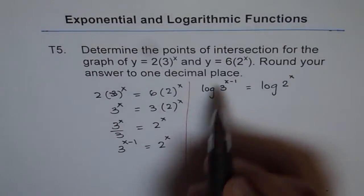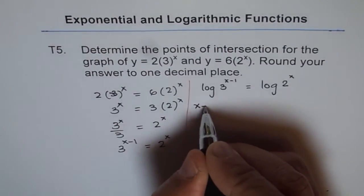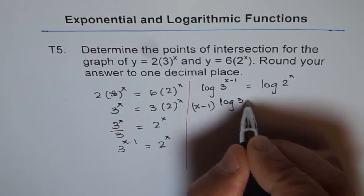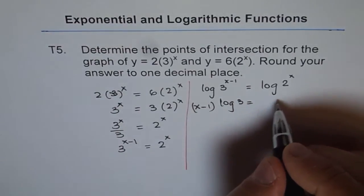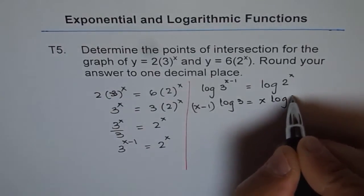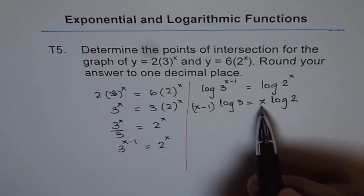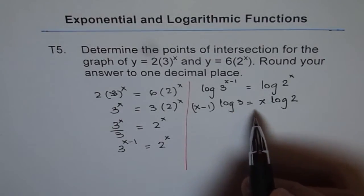Now here we can apply the power rule, and so we get x minus 1 times log of 3 equals x times log of 2. Now we can expand this and bring log x together and form an equation.